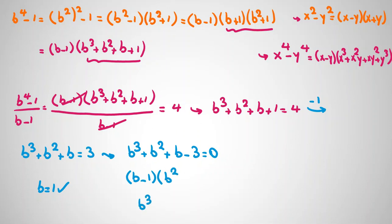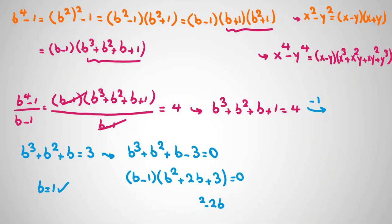Factoring out (b-1) from b³ + b² + b - 3, we get (b - 1)(b² + 2b + 3) = 0. So either the first factor is zero, giving b = 1, or the second factor b² + 2b + 3 = 0. We analyze whether the second factor can be zero.